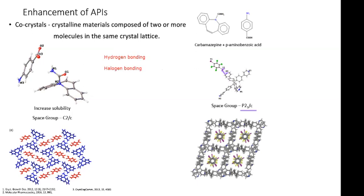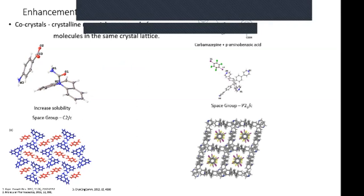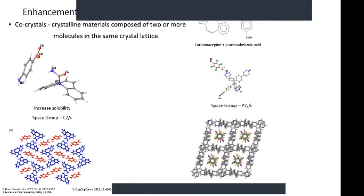Iodine works best for halogen bonding; bromine is okay but less effective. Iodine acts as a Lewis acid and nitrogen as a Lewis base — nitrogen is the best Lewis base to use, though sulfur can also be used. For hydrogen bonding, the Lewis acid is hydrogen, and the Lewis base is the carbonyl or lone pair on nitrogen or oxygen. This is one way you can enhance APIs — by forming co-crystals. The Cambridge Structure Database has numerous examples of drugs co-crystallized with carboxylic acids and other drugs.